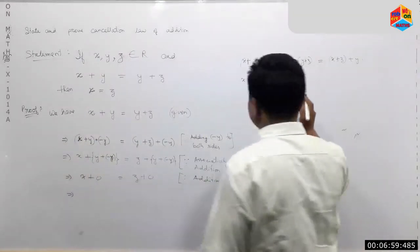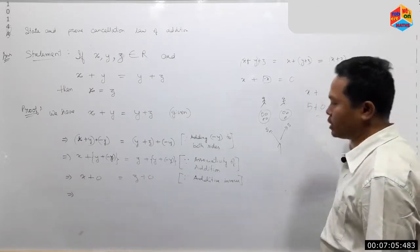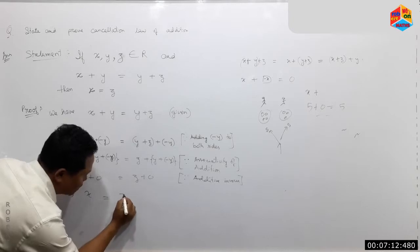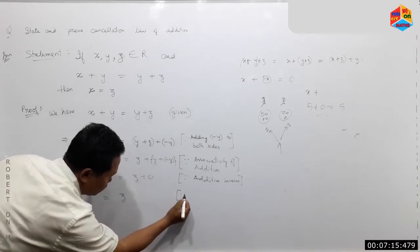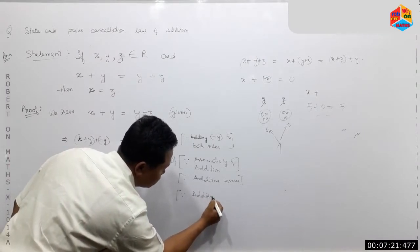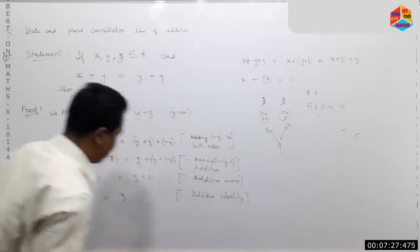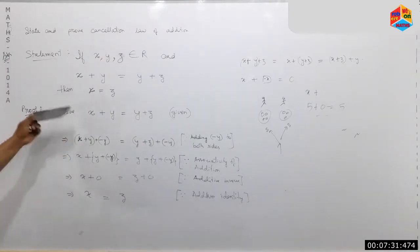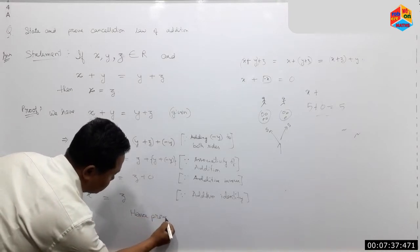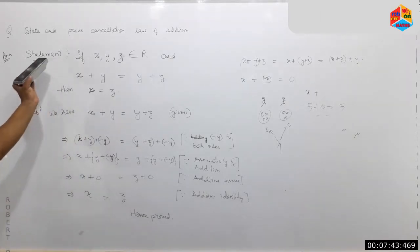By the additive identity property, x plus zero equals x. So we have x plus 0 equal to z plus 0. The additive identity brings us to the final step.